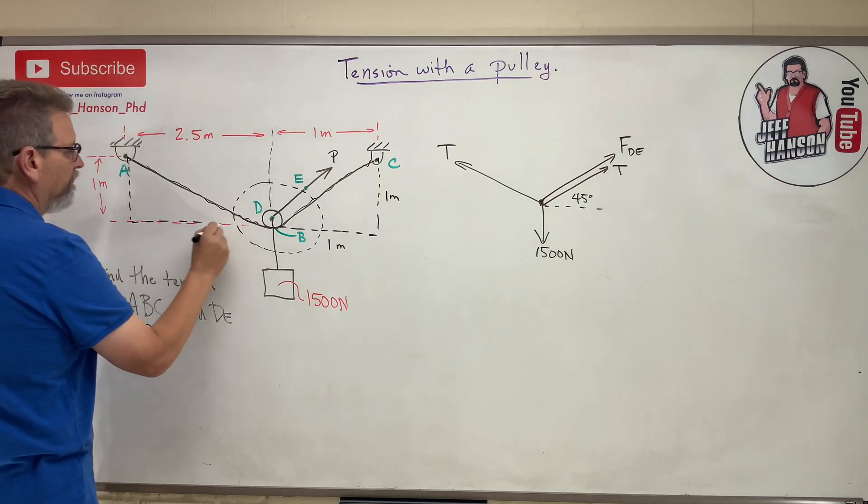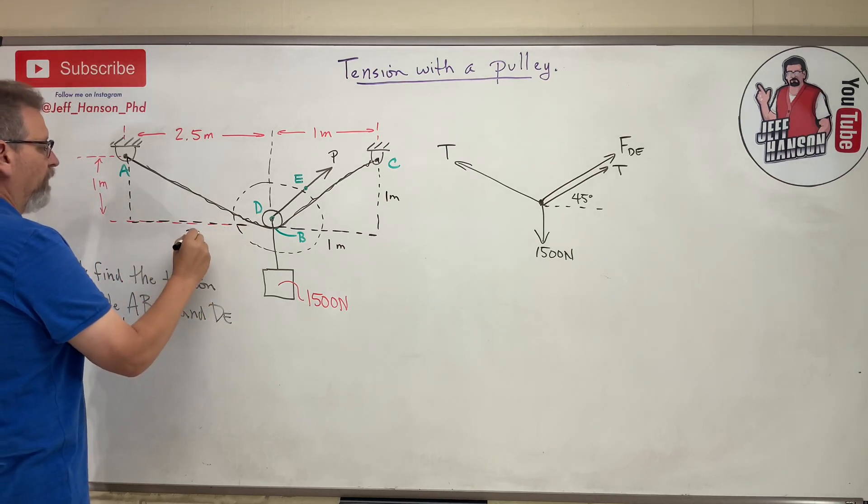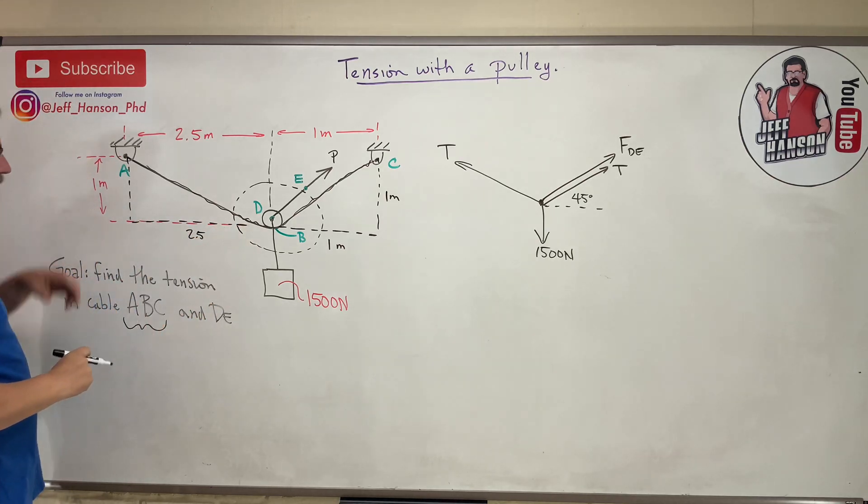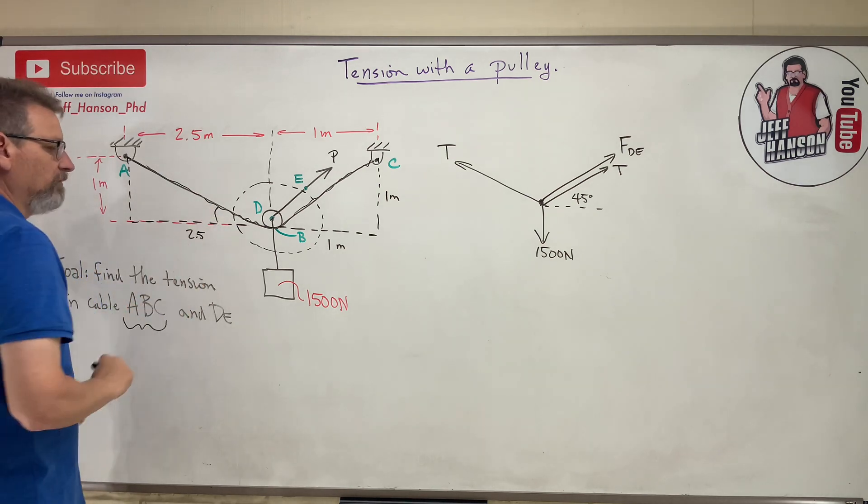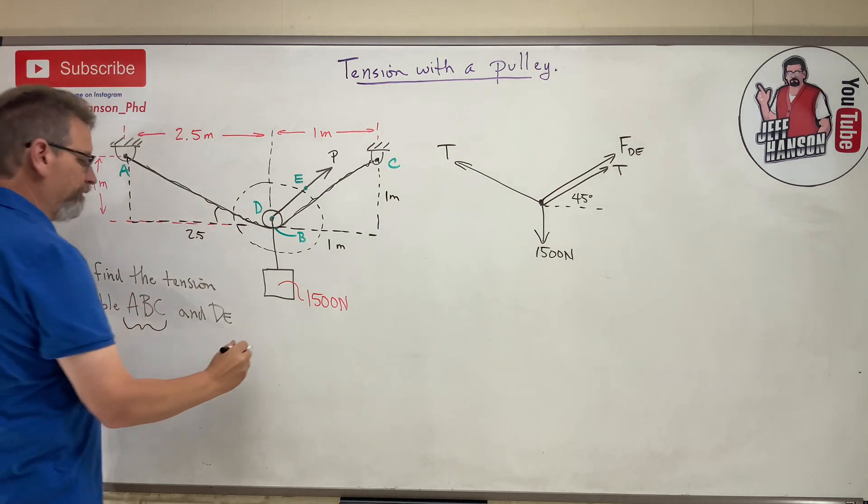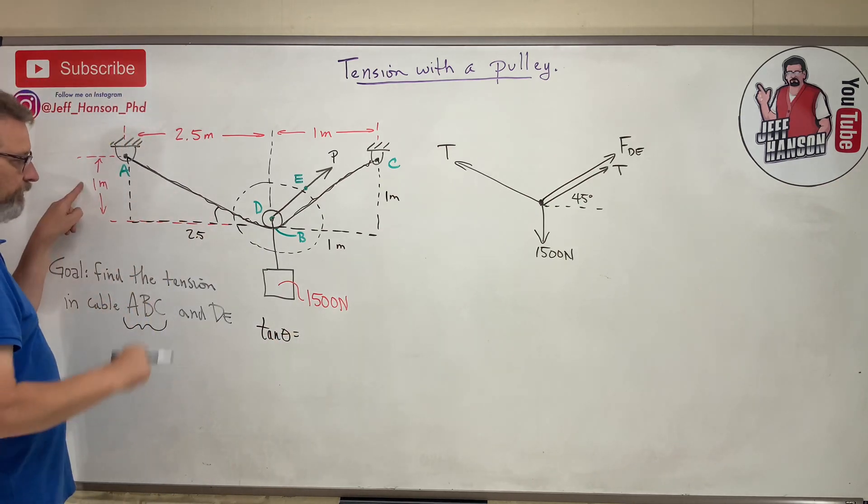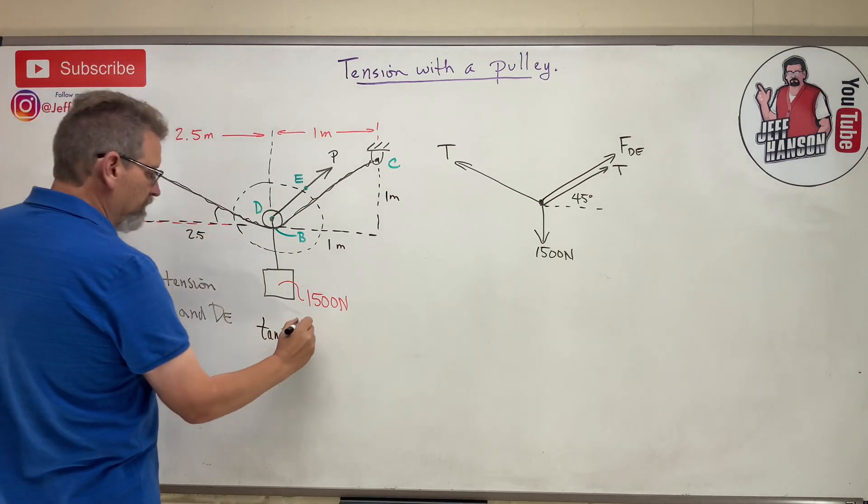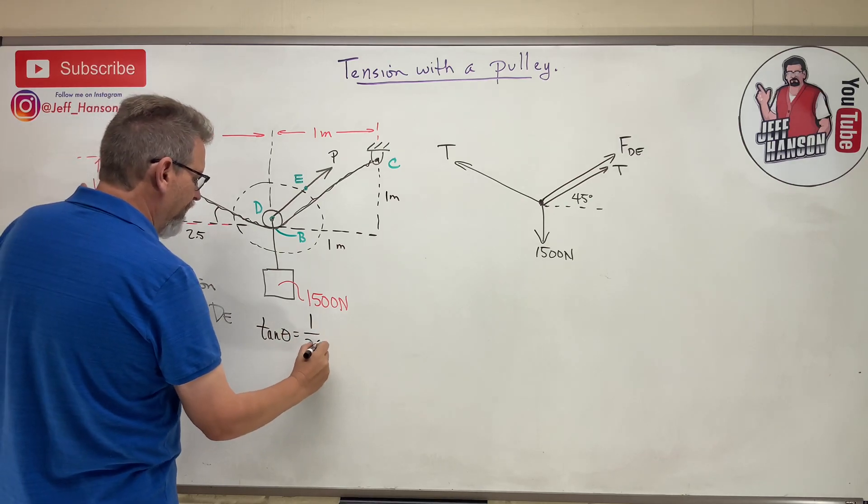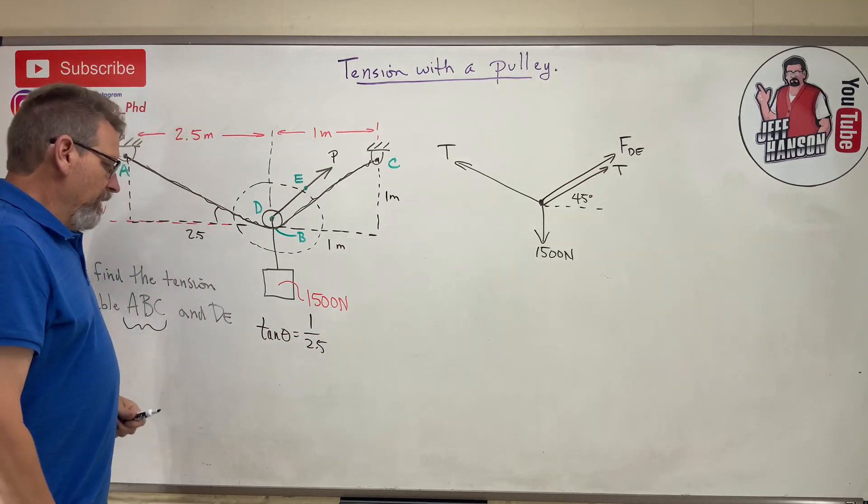And then I got this guy over here - this triangle here which is 2.5 down here and 1 there. So to find that angle we'll just use a little tangent: tan θ equals opposite over adjacent, so 1 divided by 2.5.